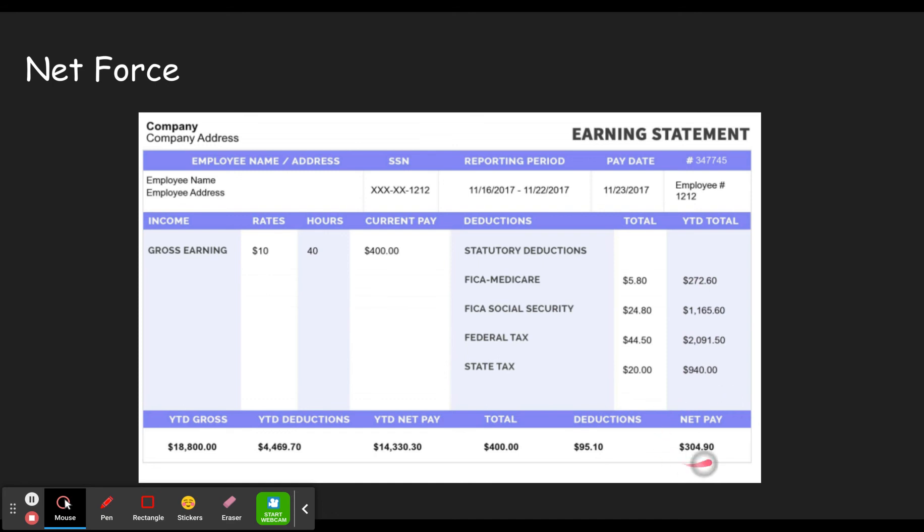And then you have the net pay is what your check is actually made out for. So the net means a combination of all the factors. When you take all the different things that affect your money, the net pay is what you get after you take everything into account. The same idea is true of net force.